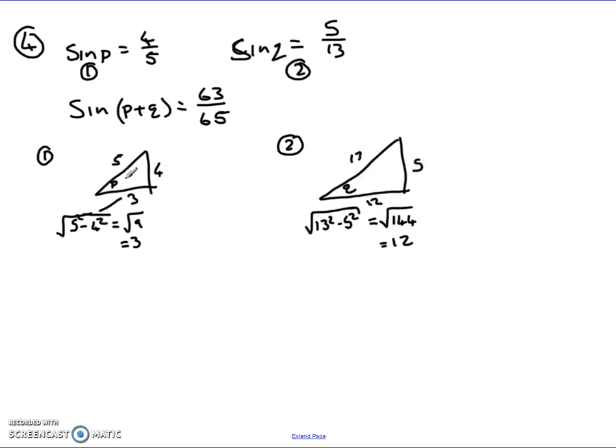So now I have two different right angle triangles that can give me exact values for two angles I'm after, P and Q. Now, I know that sine of P plus Q can be expanded using the compound angle formula. Think back to when we did that.